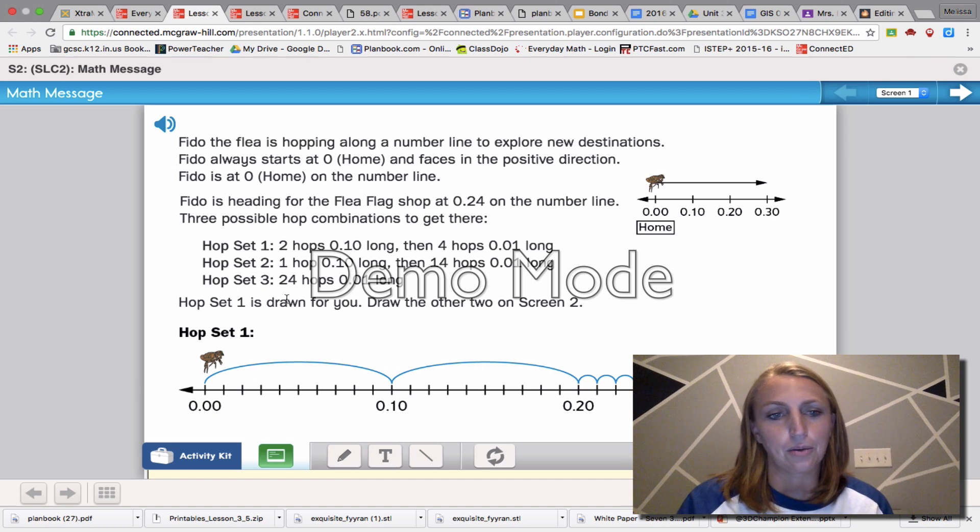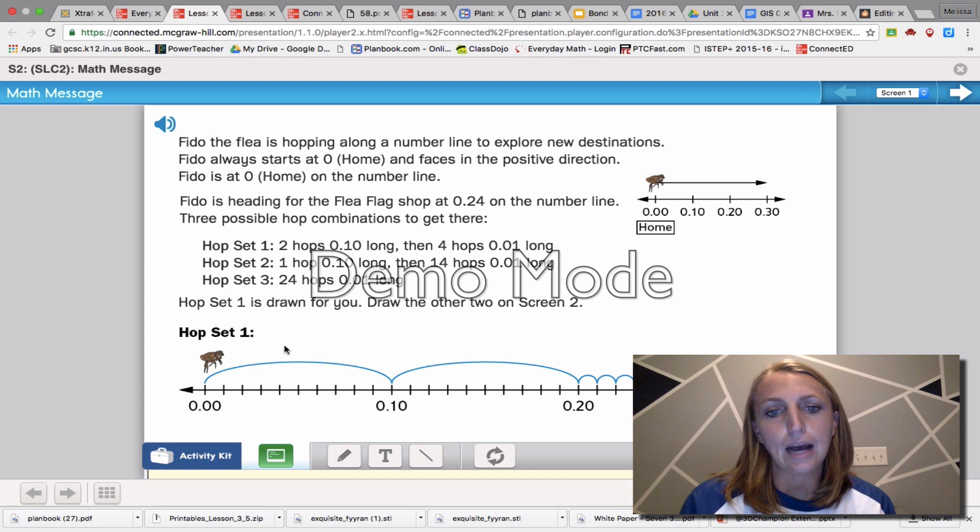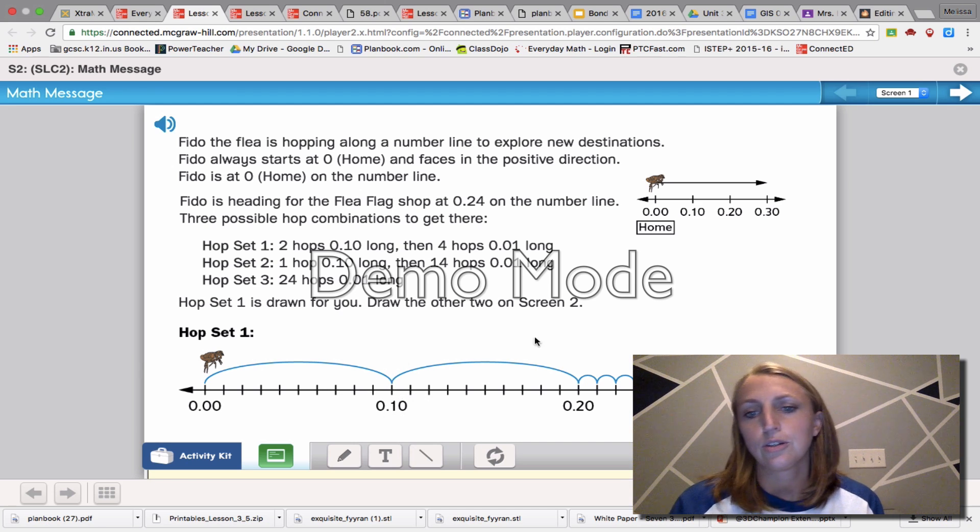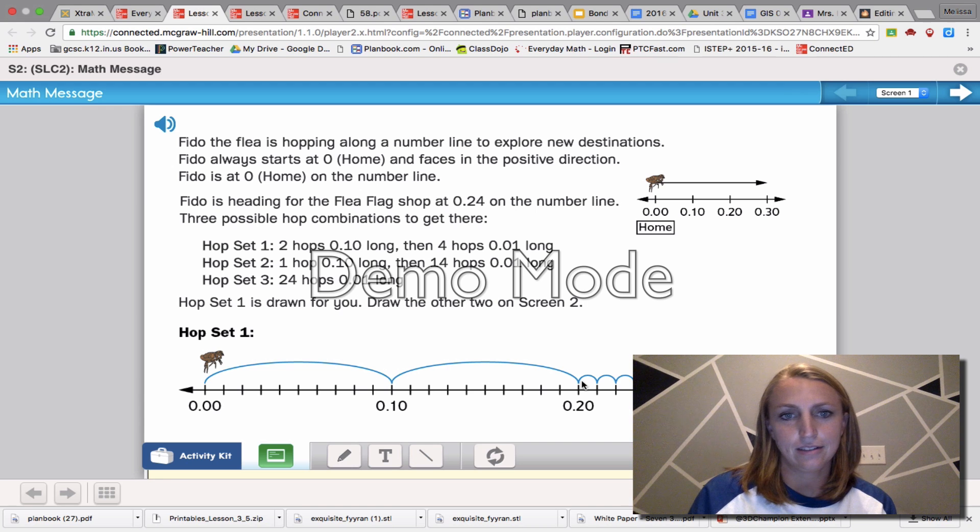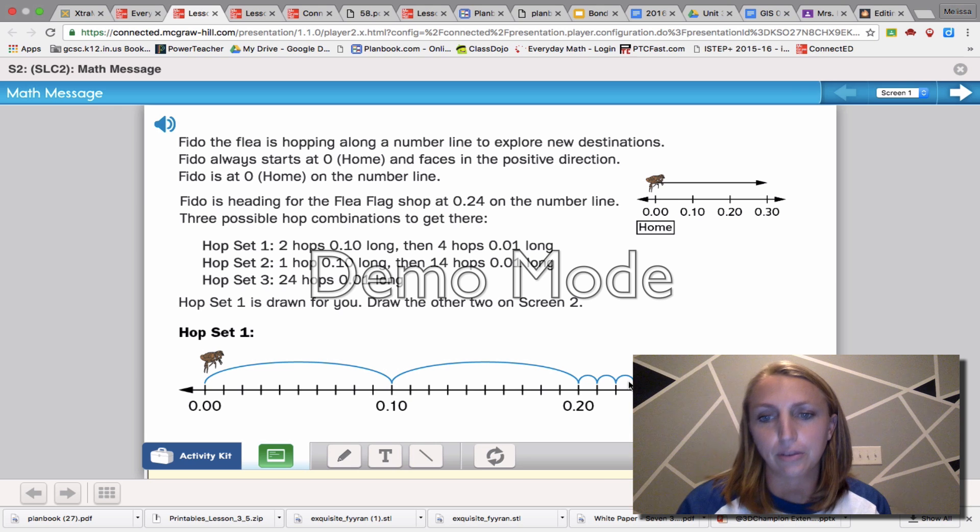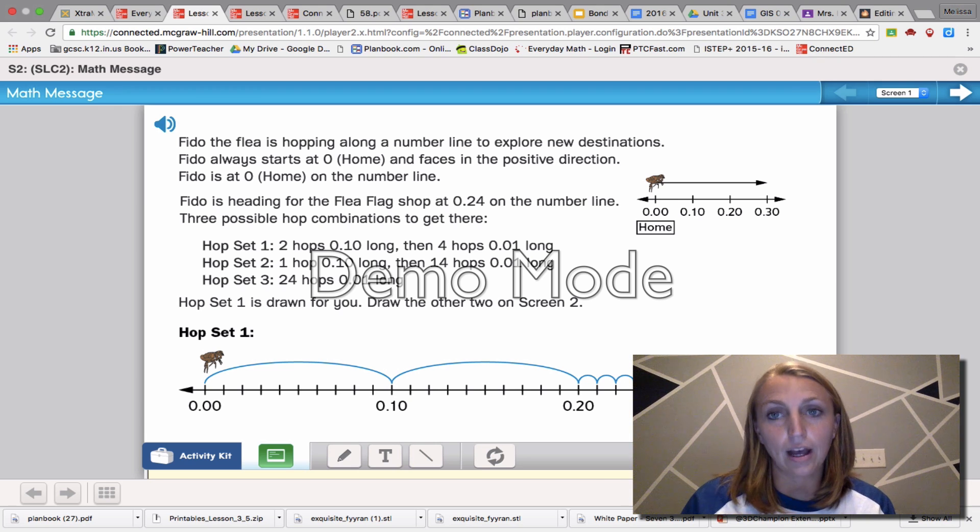So let's look at how they did this though. So we've got zero. There's Fido. He hops to one tenth point one zero. We could also call that ten hundredths. He hops to two tenths, and then he hops one one hundredth at a time, 21 hundredths, 22 hundredths, 23 hundredths, 24 hundredths, until he gets to 24 hundredths.